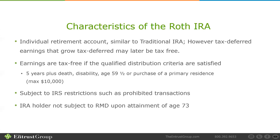And last, for younger people contributing to a Roth who want to purchase a primary residence — if you've never owned your primary residence — you can distribute contributions at any time since there's no tax deduction on a Roth, and you can also distribute up to $10,000 of the earnings as long as it's used for purchasing a primary residence. That whole distribution will be tax-free, as long as the contributions are distributed and up to $10,000 of earnings are used for that purpose.